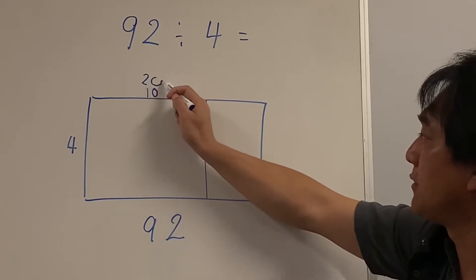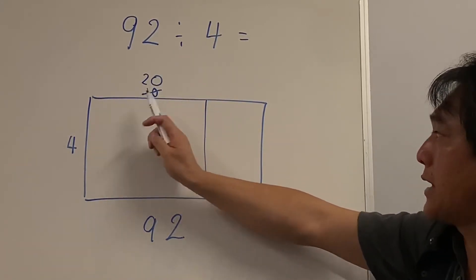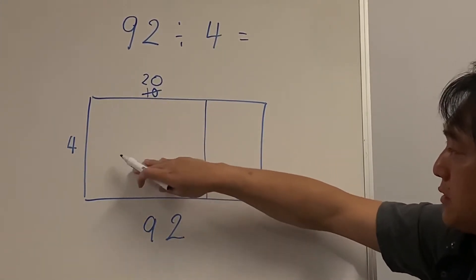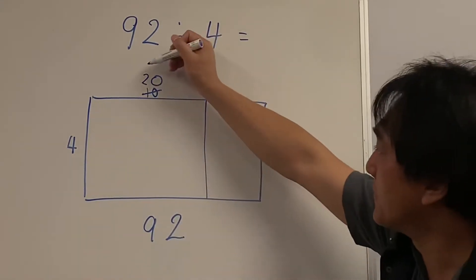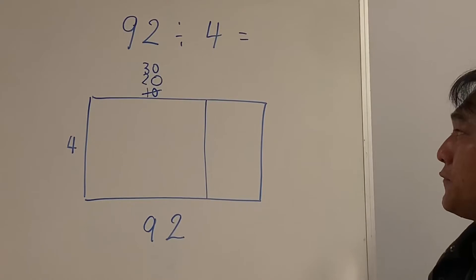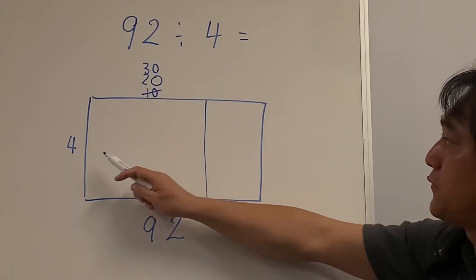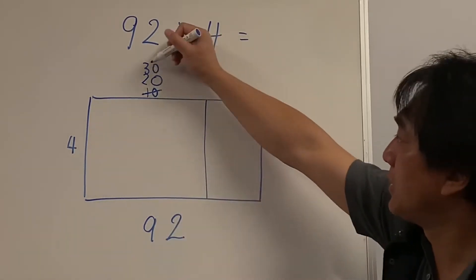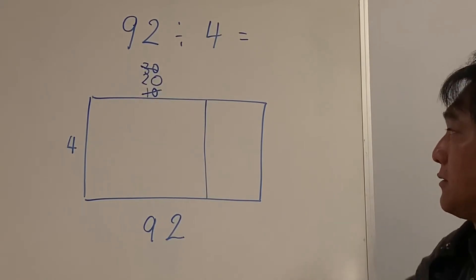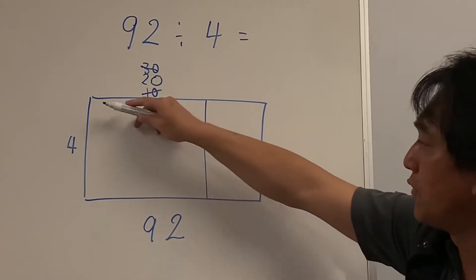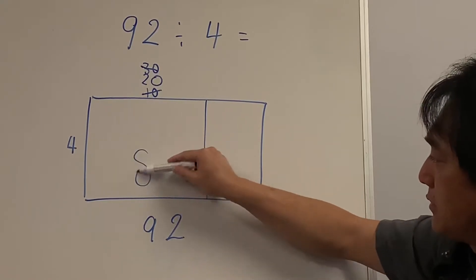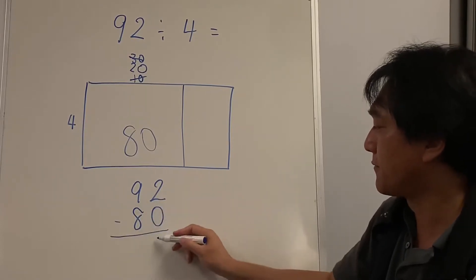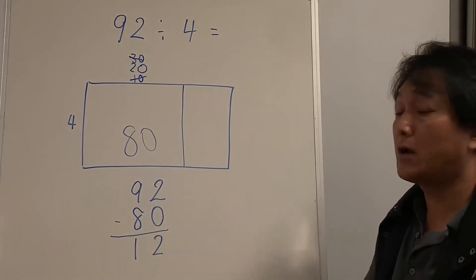Let's try 20: 2 times 4 is 8, so that's 80 — I can still fit 80 in here. Can I use 30? 30 columns of 4: 4 times 30 is 120 — that's too many. So I'll use 20 columns, giving 80 cupcakes in this box. I just used 80, and I have 12 left.